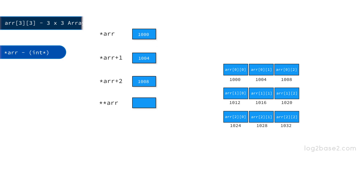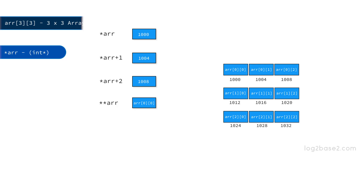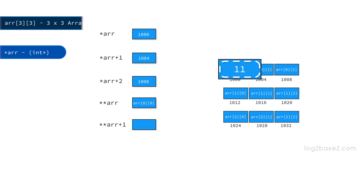Finally, **ARR will be the value of the first element. Since *ARR holds the address of the first element, **ARR gives the value stored in the first element. If we move **ARR by one position, that is **ARR + 1, the value will be incremented by 1. So if the first array element is 10, **ARR + 1 will be 11.